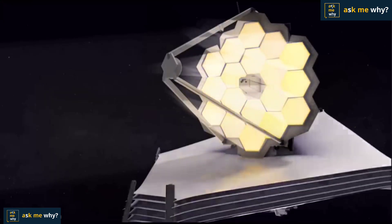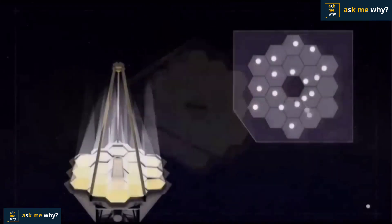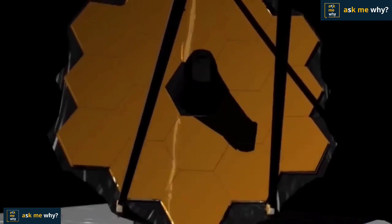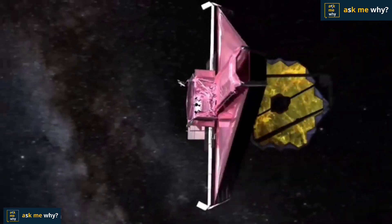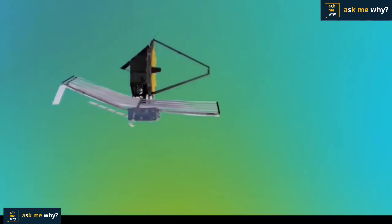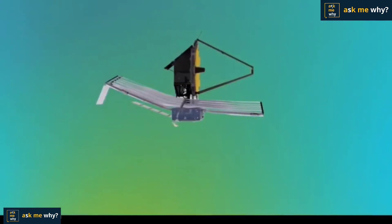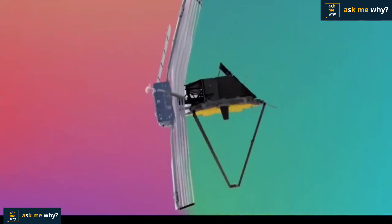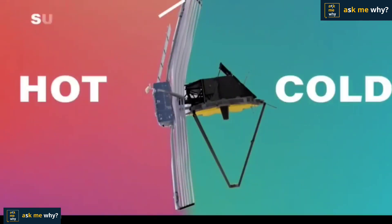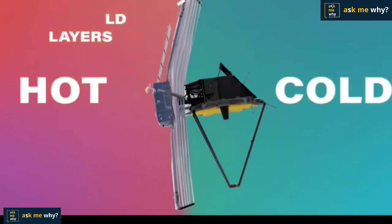Next, the most important part in this telescope is the shield. In order for the James Webb telescope to function properly, it must not be exposed to light and heat from the sun. The darker and colder the area, the clearer the telescope can take pictures.